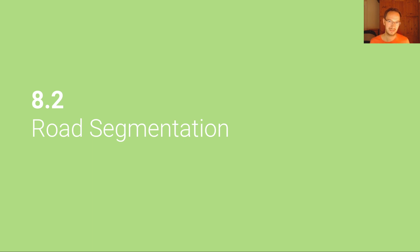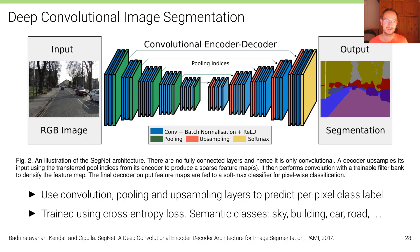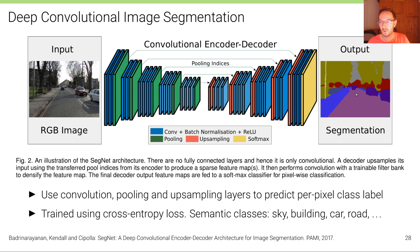Let's have a look at some of these methods in more detail, starting with road segmentation — how can we segment all the road pixels in an image? The answer today is to use deep convolutional neural networks for image segmentation, where the task is: given an RGB input image, predict for every pixel a semantic class label — for example, sky in gray, trees or vegetation in yellow, buildings in red, sidewalk in blue, or road in purple. For every pixel, we have a classification problem to solve.